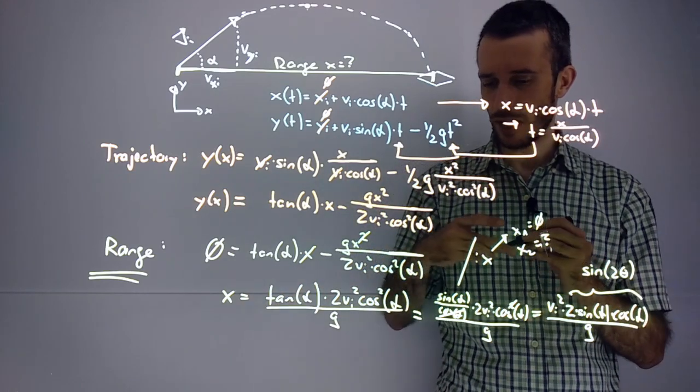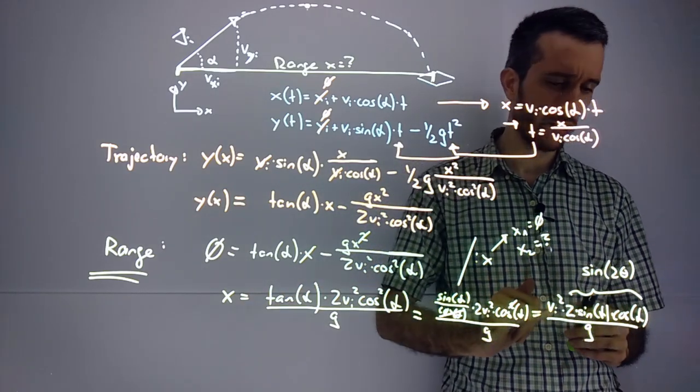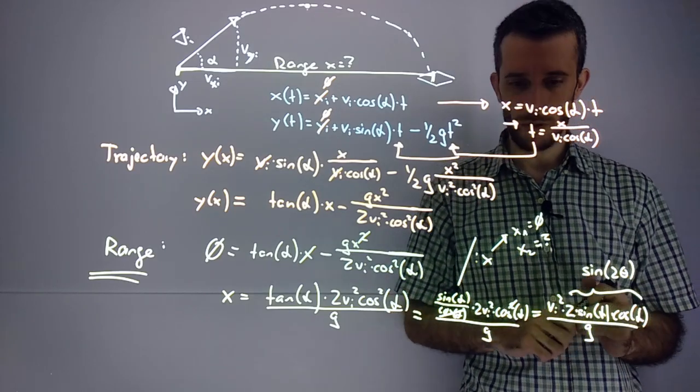Which, if you paid attention, is nothing else than sin(2θ). So I can rewrite my range equation in the end as v_initial² times sin(2θ) over g.